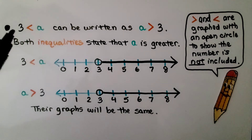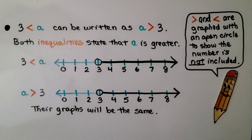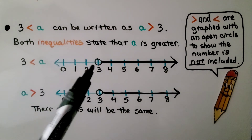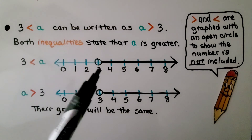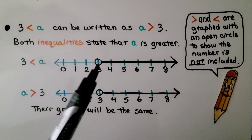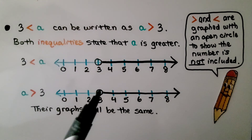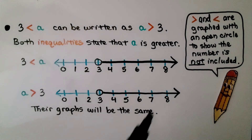3 is less than a can be written as a is greater than 3. Both inequalities state that a is greater. Here we have a graph of 3 is less than a — it doesn't include 3, so a could be any number greater than 3. And for a is greater than 3, it also doesn't include 3. We have the same graph — the graphs will be the same.